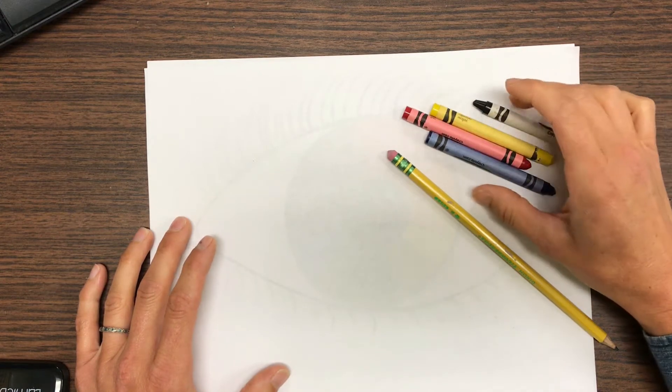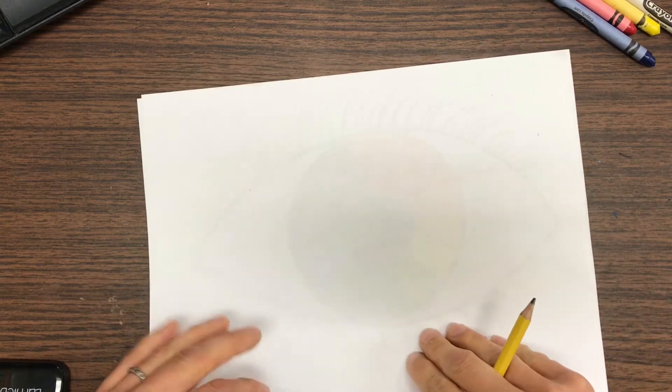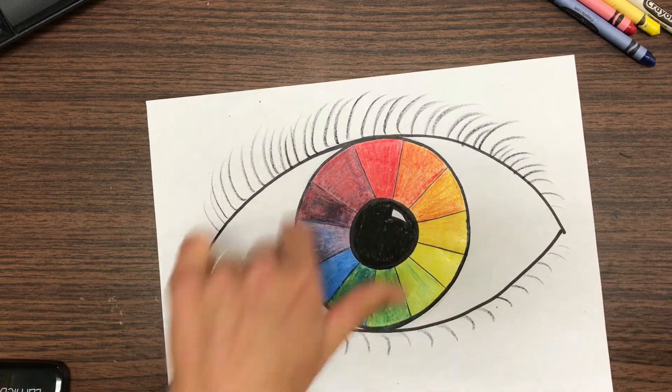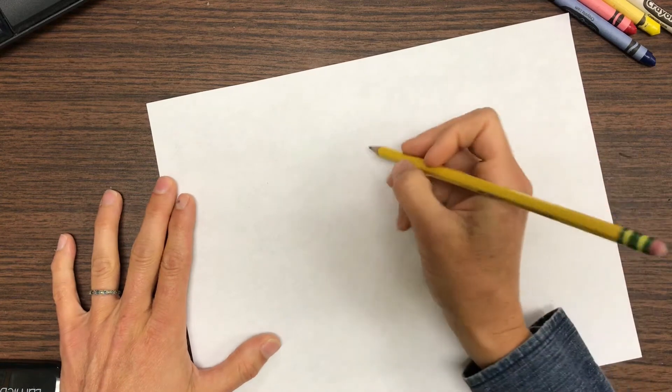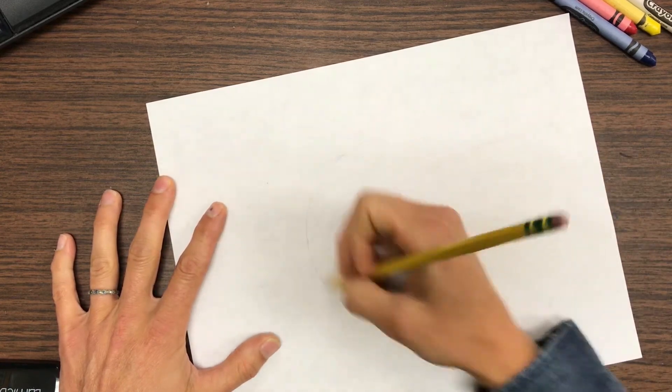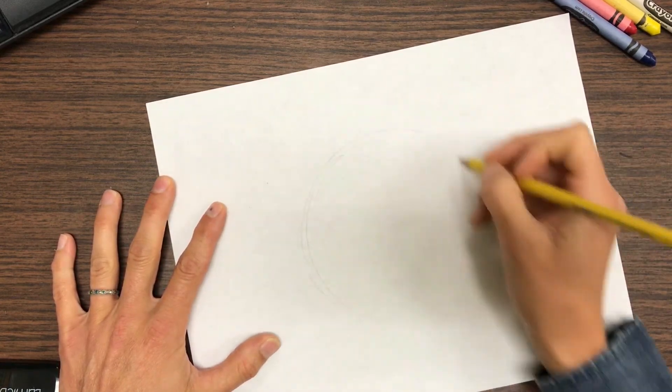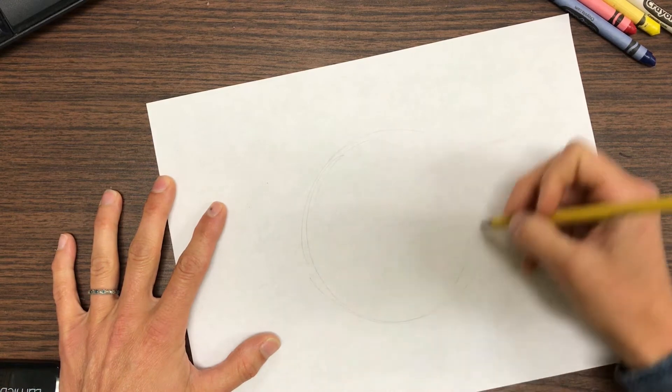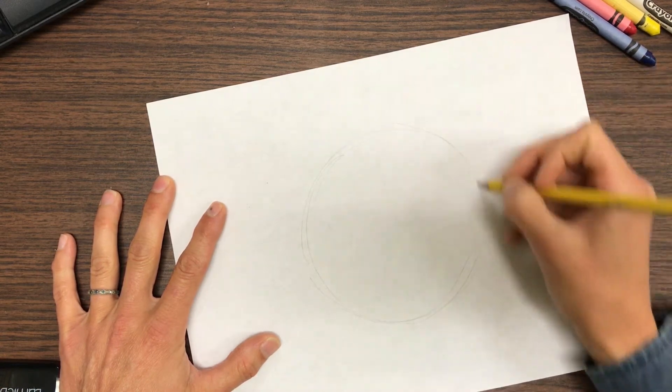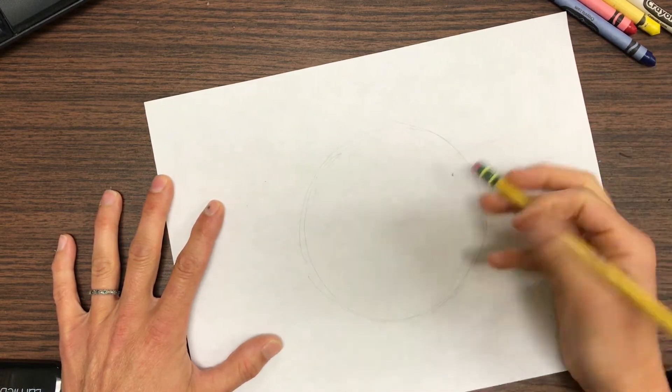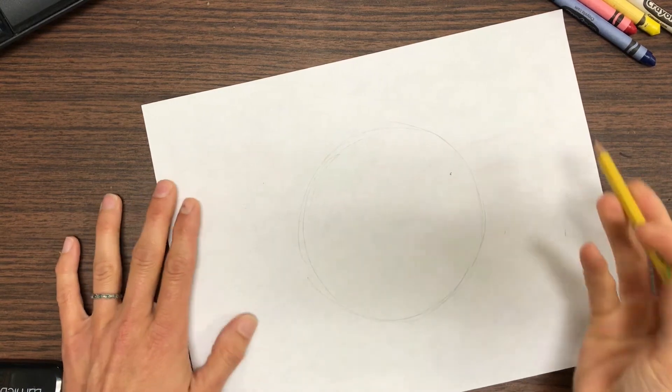We're going to start off by drawing the circle for the color wheel. Just do your best to make a circle. I always draw light till I get it right so that if I need to erase it'll erase completely. I'm going to erase a little bit right there. Now I'm going to draw the shape of the eye which is like a football shape.